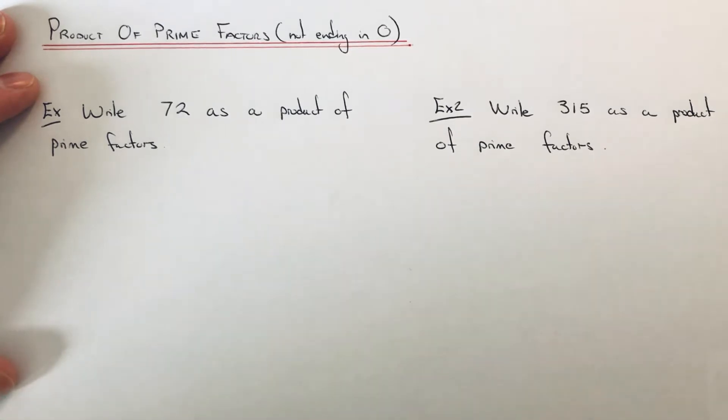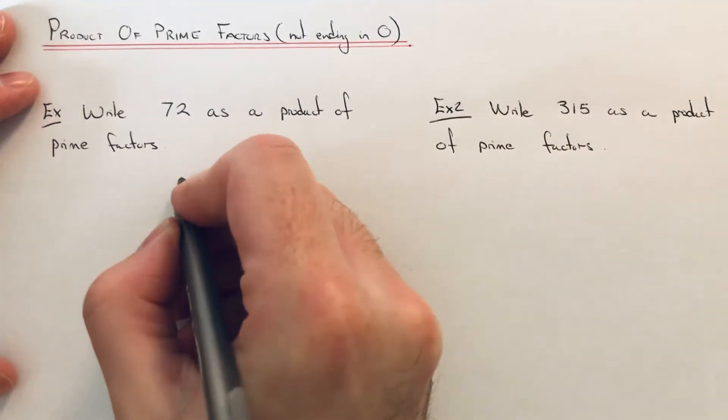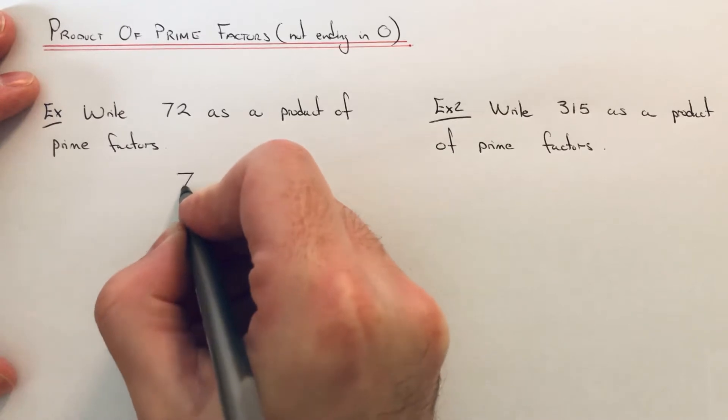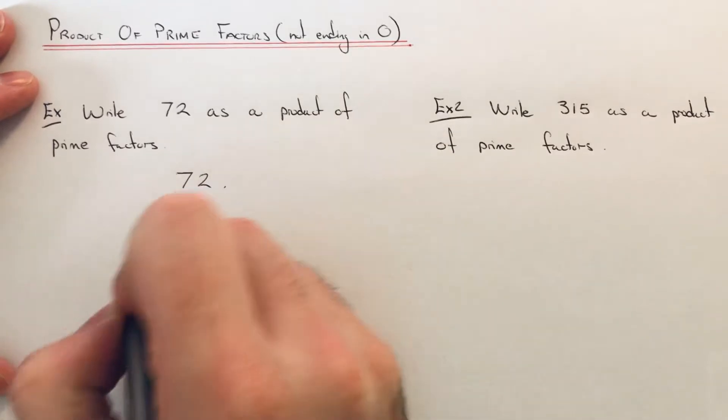Let's have a look at example one. We're going to write 72 as a product of prime factors. The best way to do the product of prime factors is to do a factor tree, so I'm going to put 72 at the top of the tree.